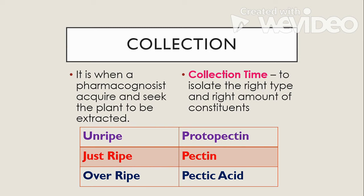There are also plants in which the constituent may vary depending on the time when the plant was collected. For example, if you collect an unripe fruit, it may contain protopectin. When you collect a just-ripe fruit, you will obtain pectin. But if you collect an overripe fruit, it contains pectic acid.